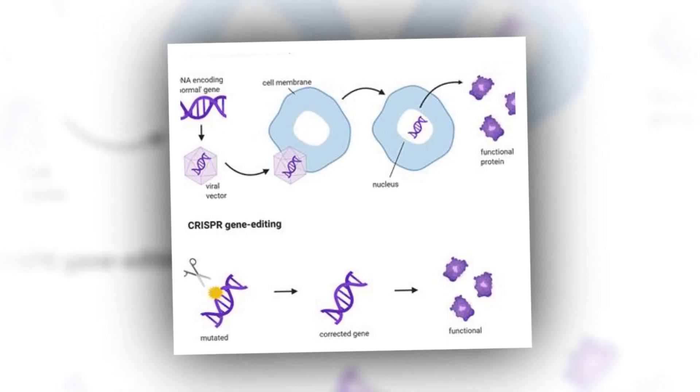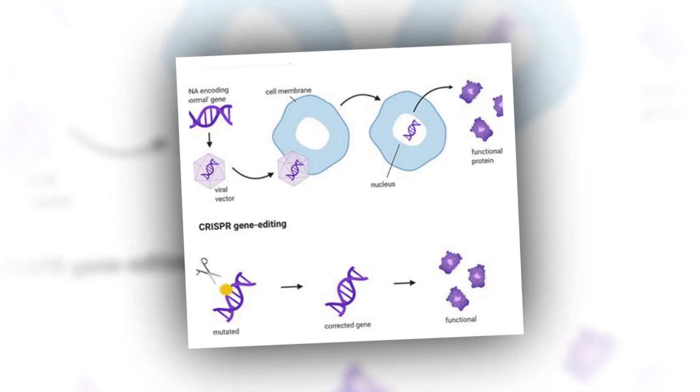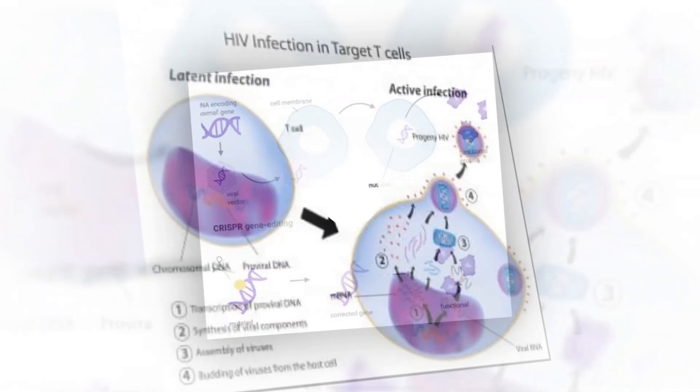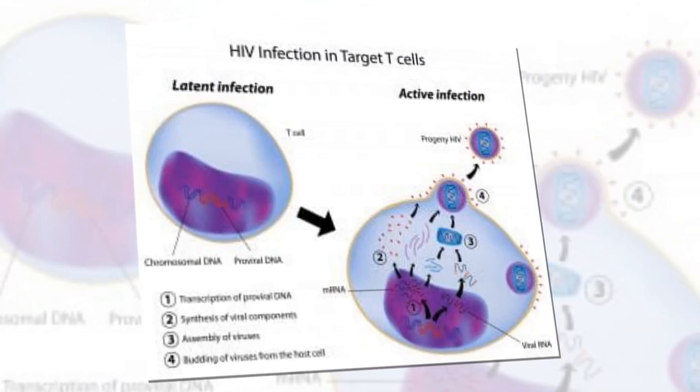In the case of HIV, simply excising, cutting out, the permanently integrated viral genetic material, provirus, from our own genes might seem to be a simple pathway to a lasting cure.